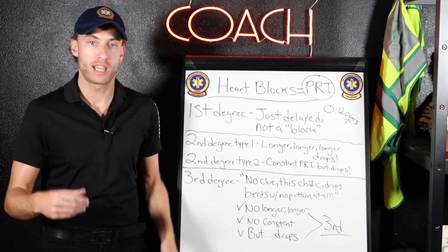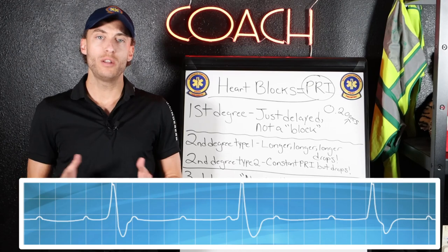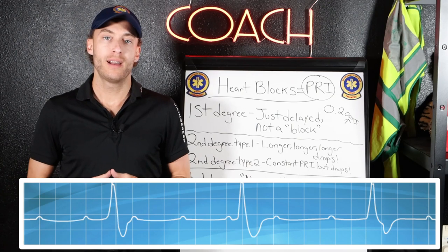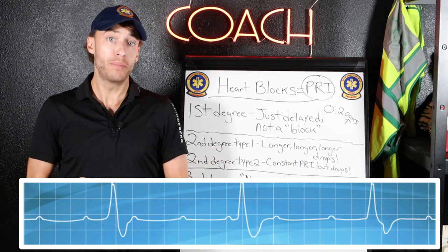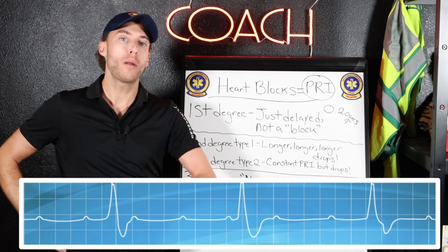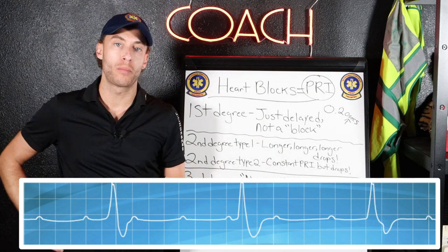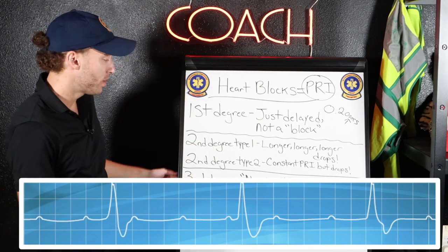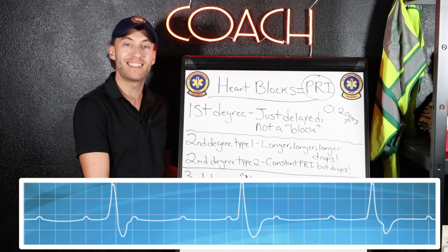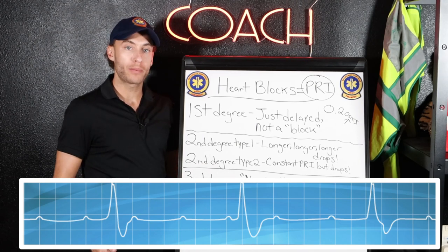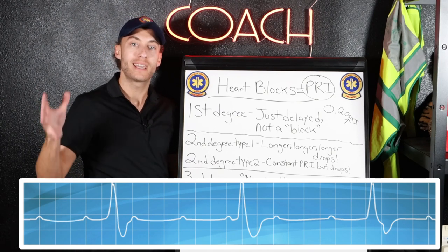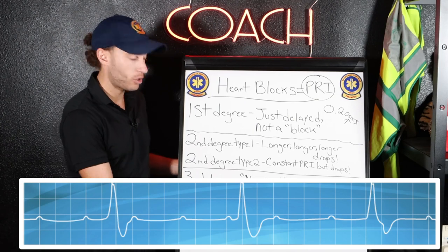Third degree heart block: you look at the EKG and say 'I have no idea what's going on here.' It's not delayed. It's dropping beats. It's not longer-longer-drops. It's not a constant PRI. What must it be? It's got to be a third degree heart block. This is chaos — it doesn't make any sense to our rules. It's not longer-longer-drops, not a constant PRI, not just delayed. It's chaos. Third degree heart block. Done.